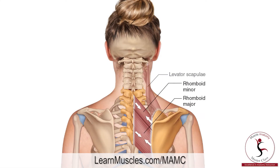We have a posterior view of the neck and upper trunk, and we are looking at the rhomboid muscles on the right side of the body — the rhomboid minor and the rhomboid major. For context, the levator scapulae muscle has been added into this figure and it has been ghosted so that we can see through it.